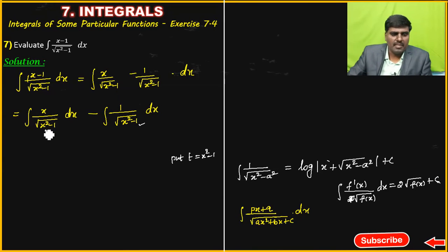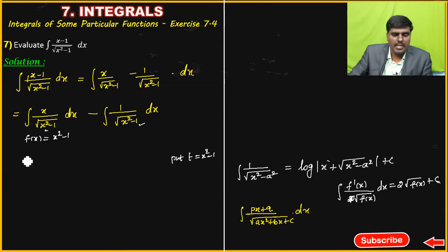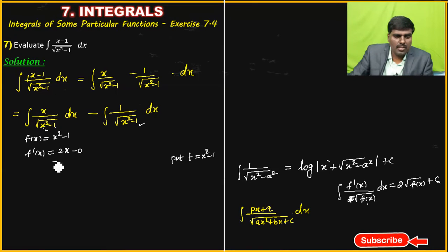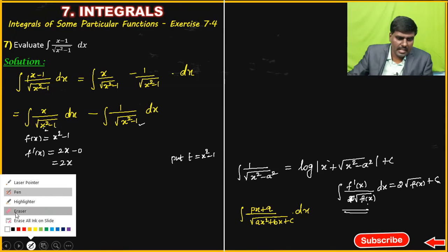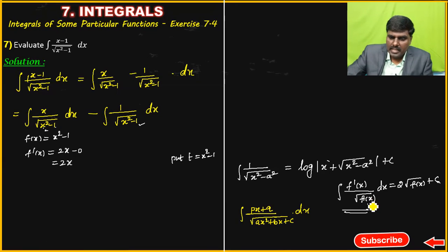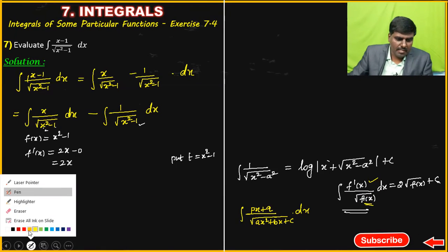Clear now? What is f(x)? The denominator value f(x) is equal to x squared minus 1. The root value of f(x) is x squared minus 1. f'(x) is equal to 2x minus 0, which equals 2x. If you want to apply the formula, apply the value of f(x): integration of f'(x) divided by root of f(x).